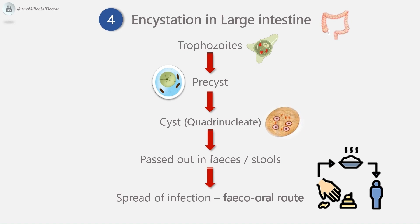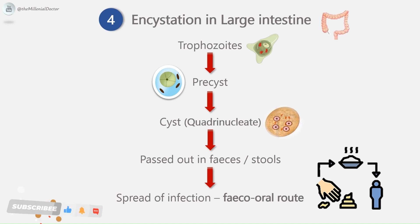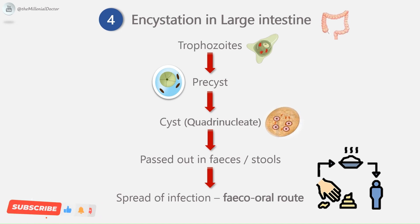The entire life cycle is completed in one host — man. In most cases, Entamoeba histolytica remains as a commensal in the large intestine without causing any ill effects. Such persons become carriers or asymptomatic cyst passers and are responsible for the maintenance and spread of infection in the community. The spread of infection is via the fecal-oral route.